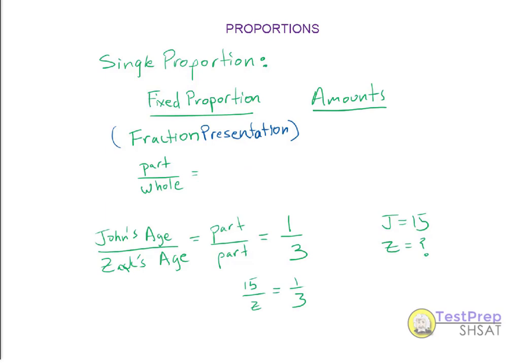Let's look at another case where information is presented as a fraction — either part to whole in a probability problem, or part to part, like John's age to Zach's age being 1 to 3. If we know J, John's age, is 15, we substitute into our proportion equation: 15 over Z equals 1 over 3. The result is Z equals 3 times 15, or 45. So Zach's age is 45 — we're almost a step ahead because the proportion equation is already set up as fractions.